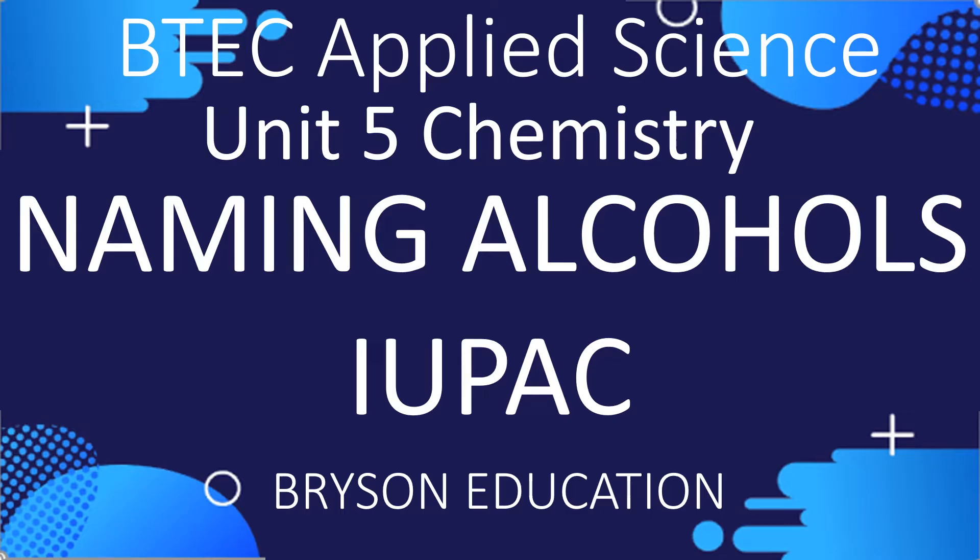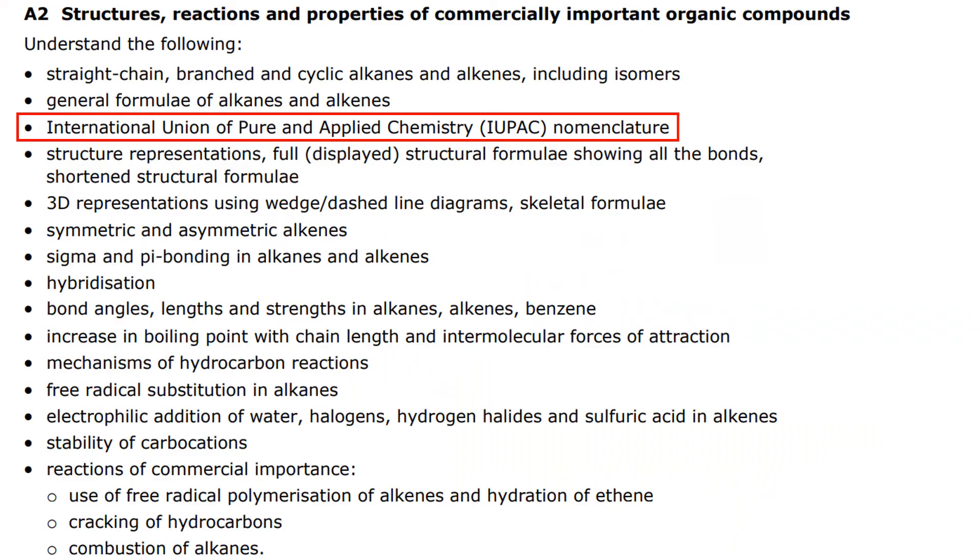Hello and welcome to my channel on chemistry lessons. This is BTEC Applied Science Unit 5 Chemistry and it's part of the IUPAC rules. We're going to look at naming alcohols. In terms of the specification, it's learning aim A2.